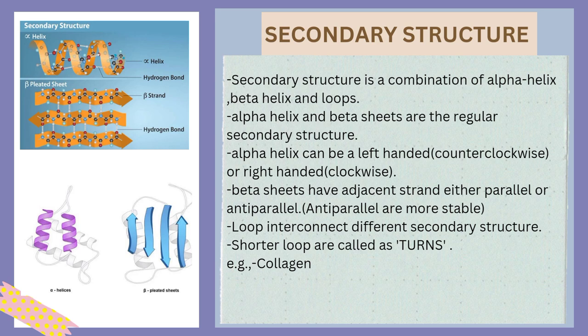Most proteins have right-handed alpha helices because it helps maintain structural stability. Beta sheets have adjacent strands oriented either in parallel or anti-parallel directions, as seen in the figure. In parallel beta sheets, strands run in the same direction; in anti-parallel, they run in opposite directions. Anti-parallel beta sheets are more stable than parallel beta sheets.